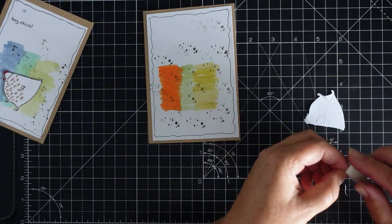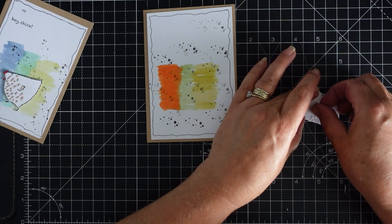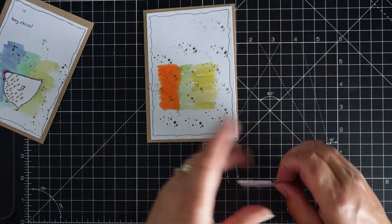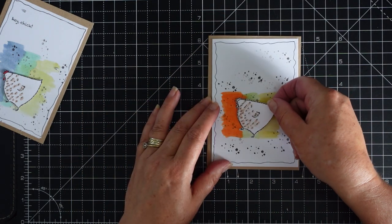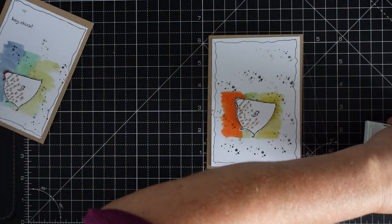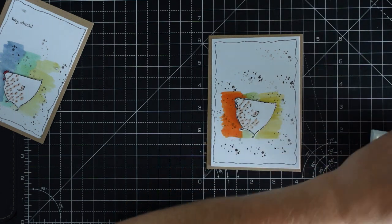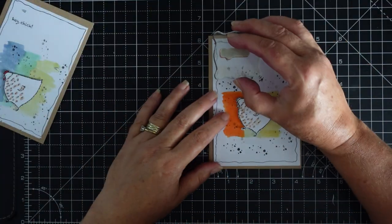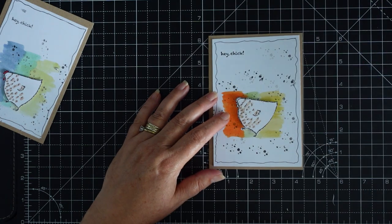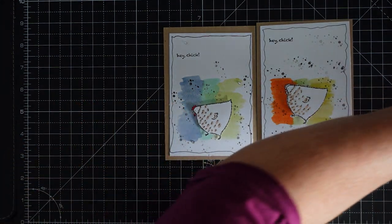Then get my dimensional foam, put it on the back. Put your little chicken, just see if this is right there. And then stick him on. And there you go, that is that.